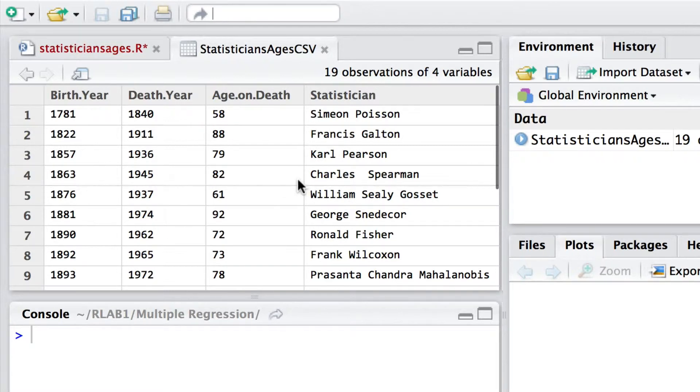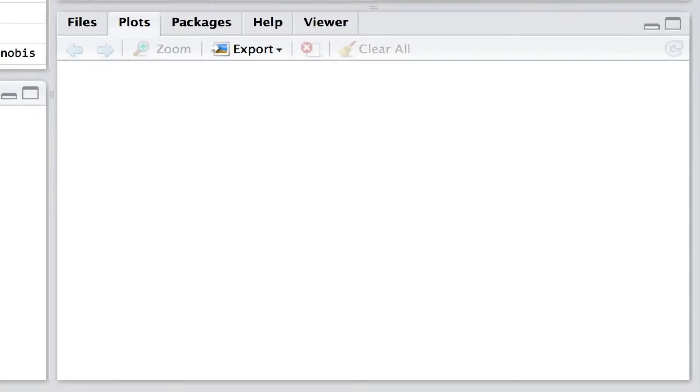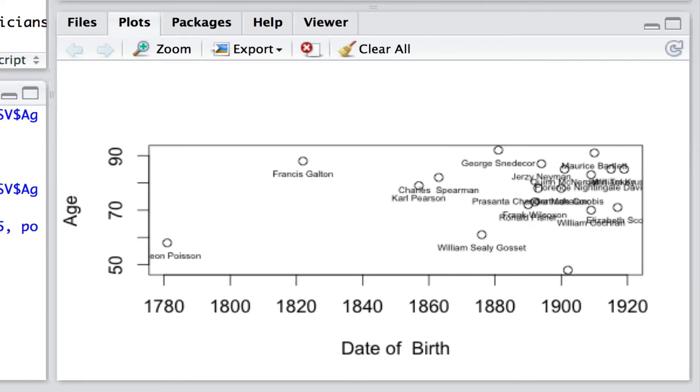And the first thing that we should do is simply plot a graph of the age of death according to a certain predictor. And this is what we're going to be looking at here.